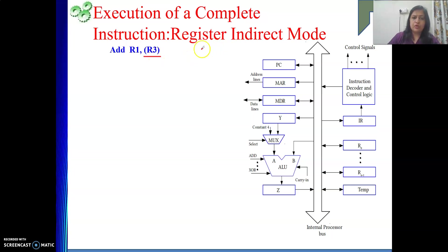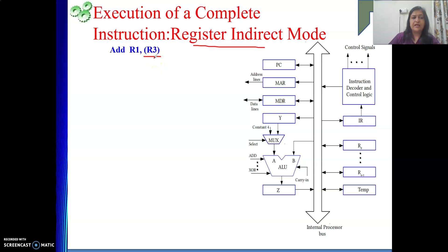In this example, though we are using register indirect mode, most of the part will be similar to the last video. But what is newly added is that the register content will be used to write back to memory — the register content acts as an address, and the result of the addition will be the data written into that location. So here we will add a memory write cycle. If we need to perform a write operation to memory, how to do it — that we will see here.